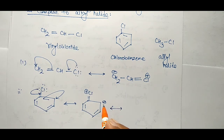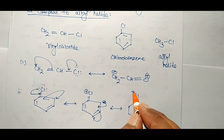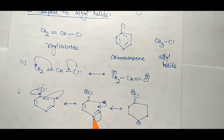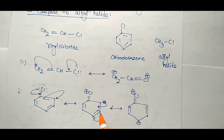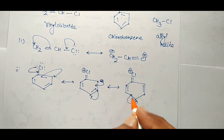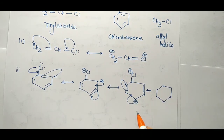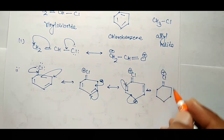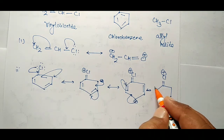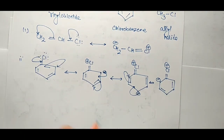In the next resonating structure, this electron density comes to this carbon — the pi bond shifts electron density to the next carbon atom. So in this case the carbon-chlorine has double bond character, chlorine carries positive charge, and the negative charge is on the ring carbon. This electron density then shifts again, giving another resonating structure where carbon-chlorine has double bond character and chlorine carries positive charge, with the negative charge distributed around the ring.